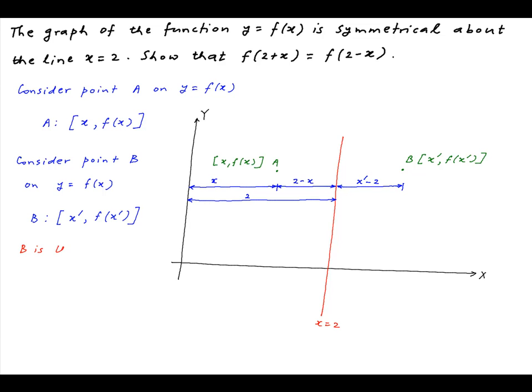So the point B will be a mirror image of the point A with respect to the line x = 2 if the horizontal distance of A from x = 2 is equal to the horizontal distance of B from the line x = 2.